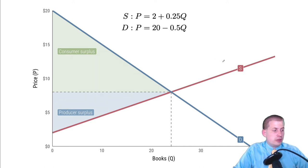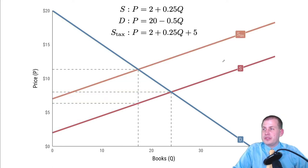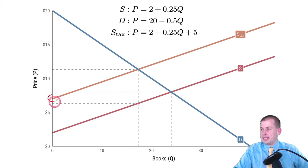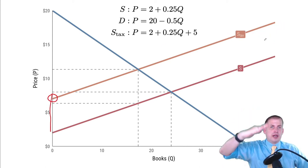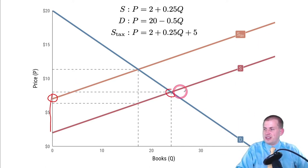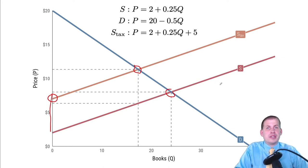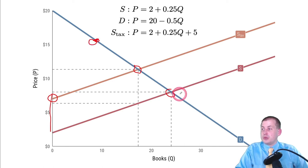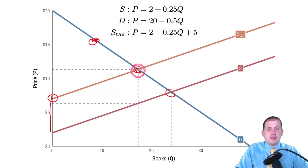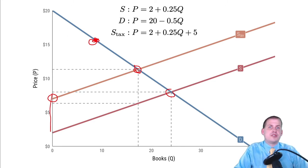We can look at this distortion graphically. Originally there are 24 books sold at eight dollars with lots of consumer and producer surplus. If the government imposes a five-dollar tax on every book, it raises the supply line up by five — the intercept moves from two to seven, same slope but shifted up. The new equilibrium is around 12 dollars for about 18 books. Someone willing to spend fifteen dollars was paying eight and getting lots of surplus; now paying twelve they still have some surplus, but less.